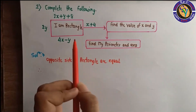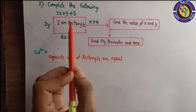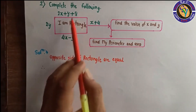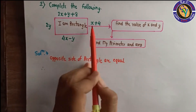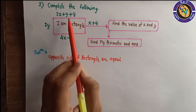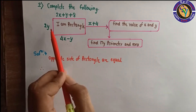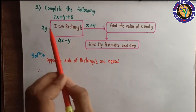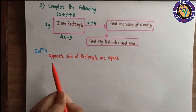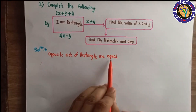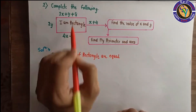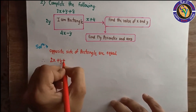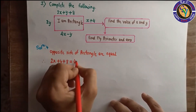The next problem is a rectangle word problem. The opposite sides of a rectangle are equal. So we set up two equations. One side expression is equal to the opposite side expression. We have 2x plus y plus 8 equals 4x minus y.